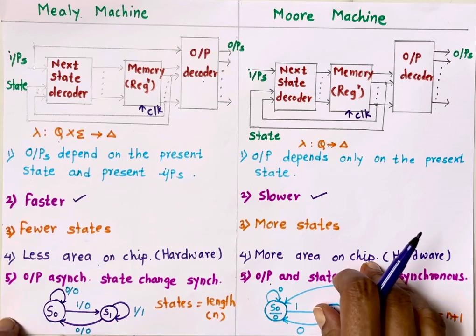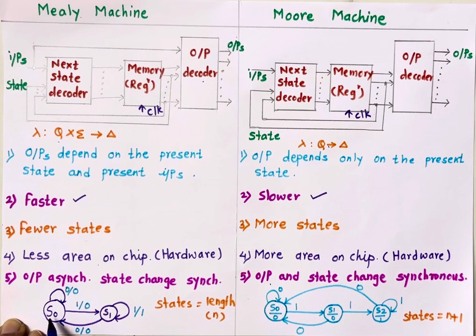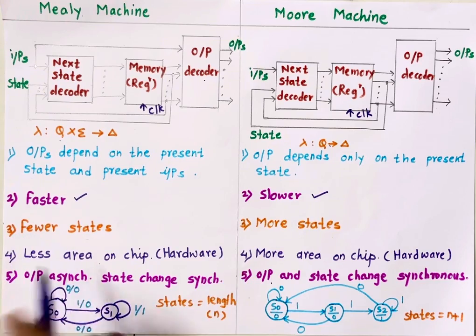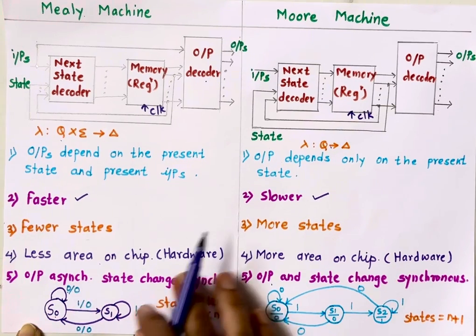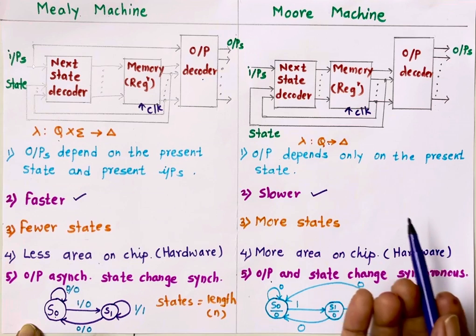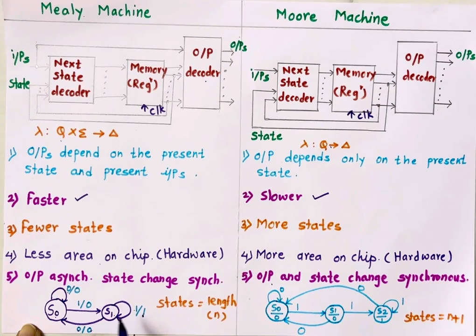Looking at state diagrams: this is the state diagram for a Mealy machine and this is for a Moore machine. In the Mealy machine, output depends on present state, and here S0 and S1 are two states. To design the same circuit in Moore machine we need three states. In the Mealy machine, for state S1, if input is 0 output is 0, but if input is 1 output is 1 — so for the same state S1 we have two outputs, and hence one state is enough.